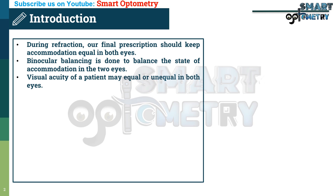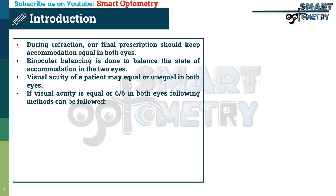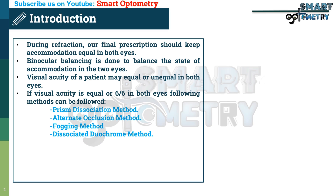Visual acuity of a patient may be equal or unequal in both eyes. If visual acuity is equal — 6/6 in both eyes — the following methods can be followed: prism dissociation method, alternate occlusion method, fogging method, and dissociated Borish method.